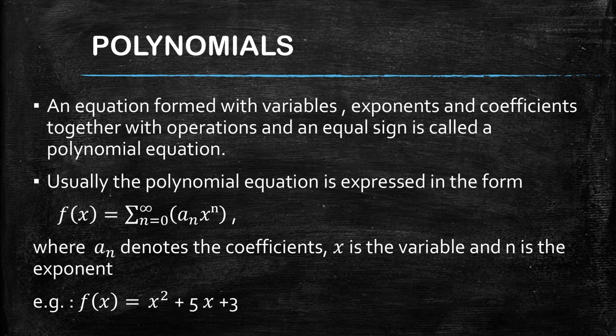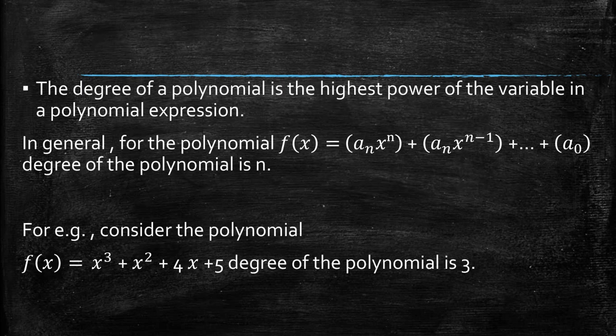For example, f(x) = x² + 5x + 3. The degree of the polynomial is the highest power of the variable in the polynomial expression. In general, for the polynomial f(x) = aₙxⁿ + aₙ₋₁xⁿ⁻¹ + ... + a₀, the degree of the polynomial is n.